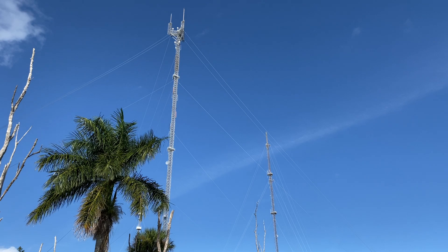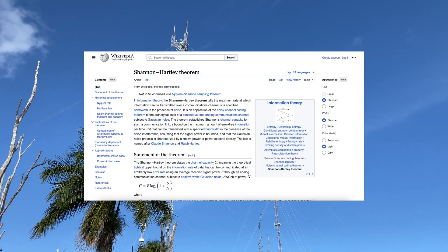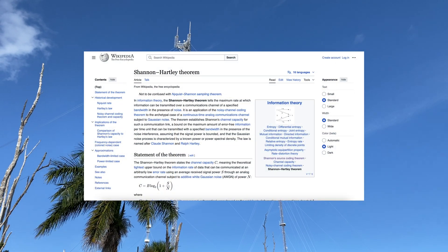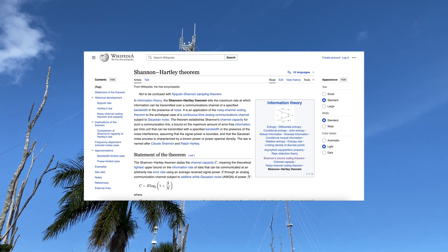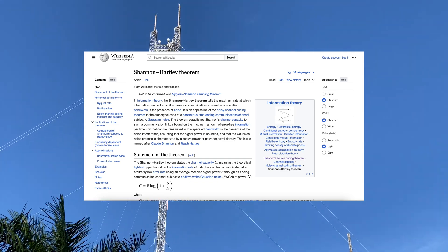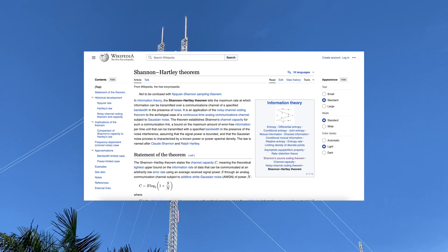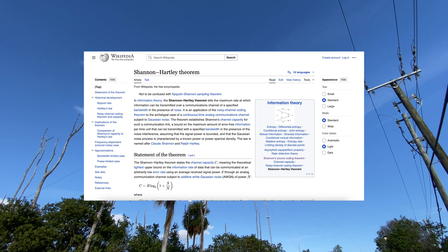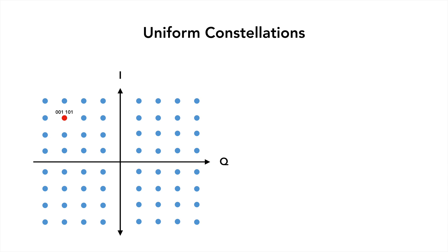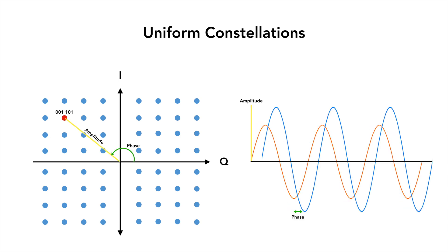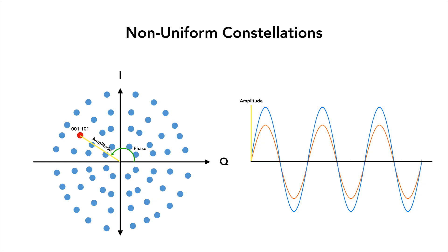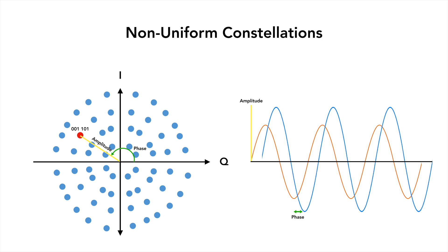In information theory, there is a theorem known as the Shannon-Hartley theorem, named after its creators Claude Shannon and Ralph Hartley. The theorem dictates that there is a theoretical maximum as to how many bits can be sent in a given bandwidth at a given SNR. Constellations, which dictate the amplitude and phase of the signal at a given unit of time, had always been uniform. However, it was discovered that by utilizing these constellations in a non-uniform fashion, you could send more data at a given SNR, or send the same amount of data at a lower SNR.